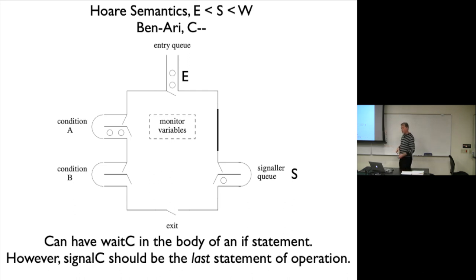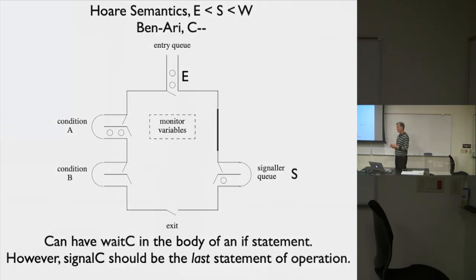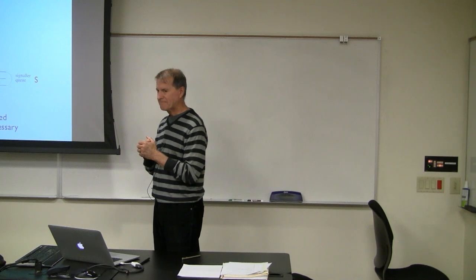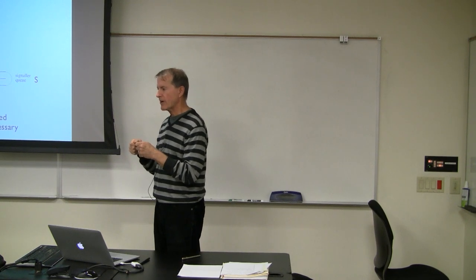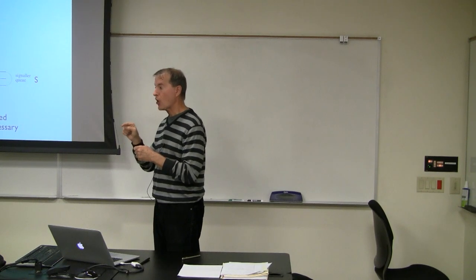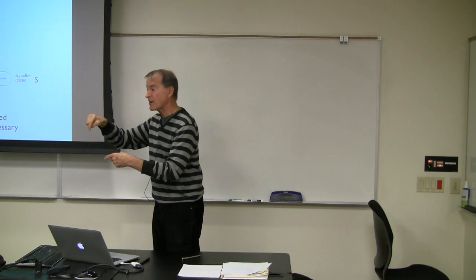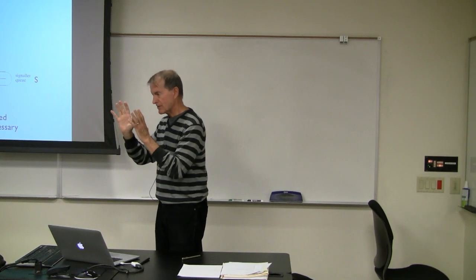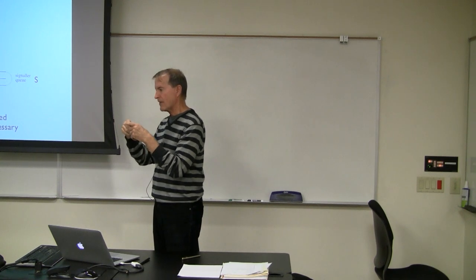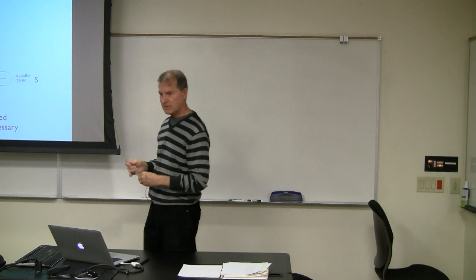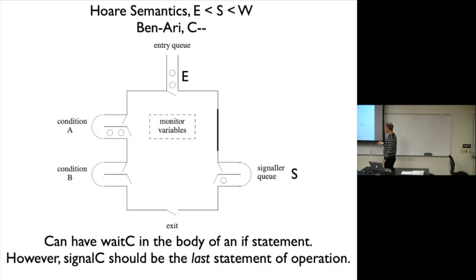The entry queue represents processes — threads executing concurrently — that have called a monitor method but found another process already executing inside. Because mutual exclusion is guaranteed, they're stuck in the entry queue. They've tried to invoke a monitor method but someone's already in there, so they're blocked on entry. Because the signal is always picked, the waiting queue is not necessary.